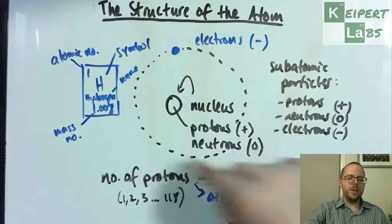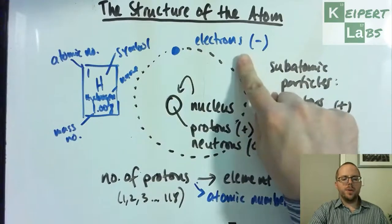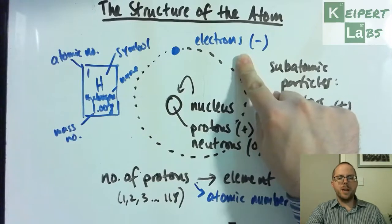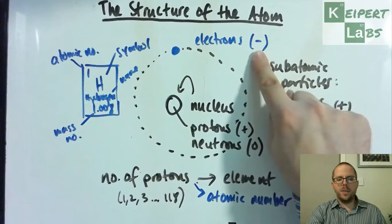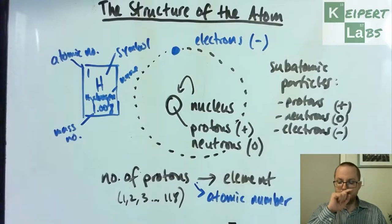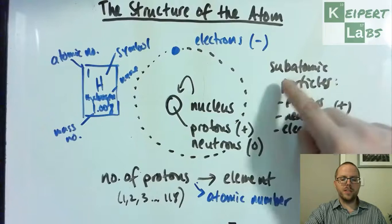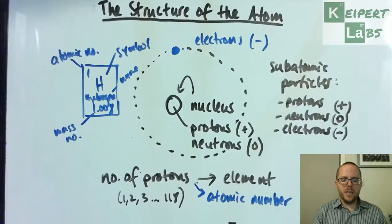Around the outside, or around the nucleus, we talk about electrons being these particles that are orbiting around like planets around the sun, and they have a negative charge. So these we refer to as our subatomic particles.